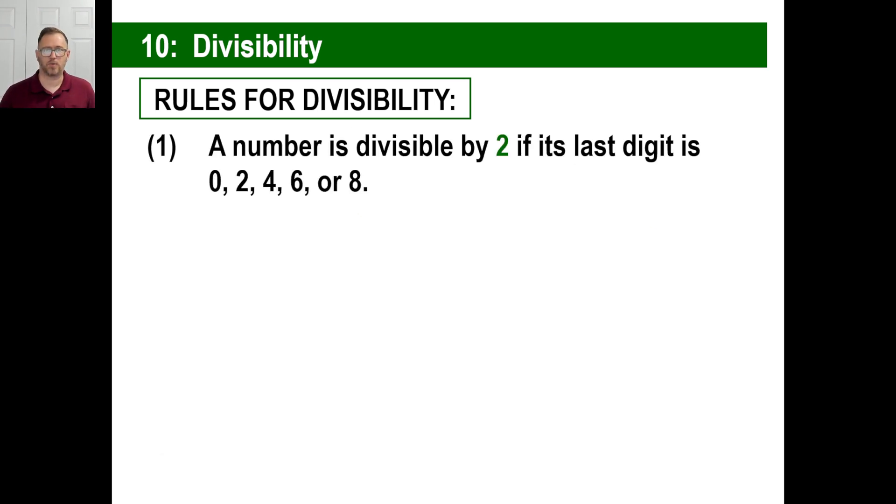Rule number one for divisibility. A number is divisible by 2 if the last digit is 0, 2, 4, 6, or 8. In other words, every even number is divisible by 2.